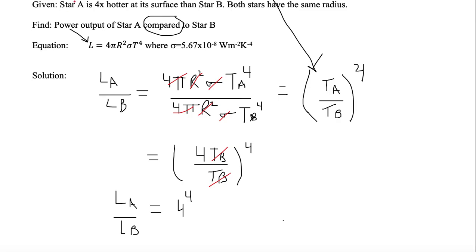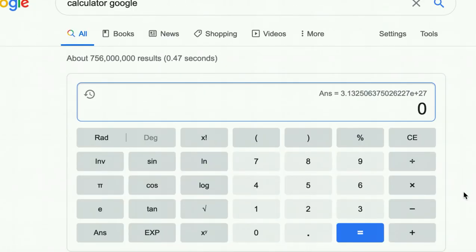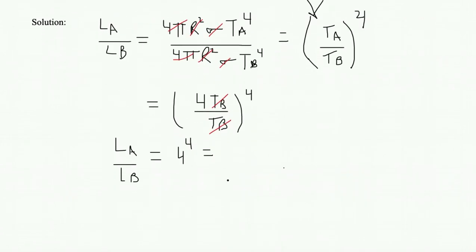So now all we need to do is calculate this out. So on the Google calculator, we have 4 to the y 4. We hit equal. We have 256 as our answer. So we have LA over LB is equal to 256.